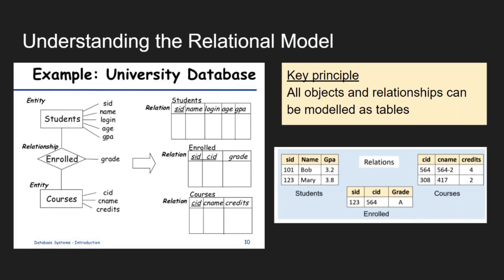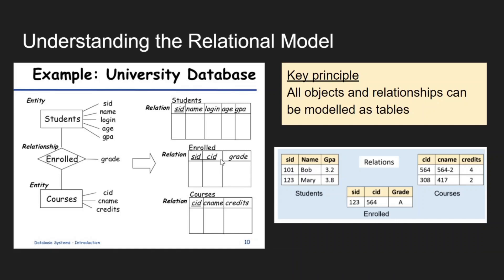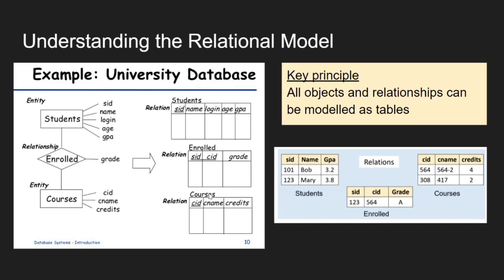The key principle of the relational database model is that all objects and relations can be modeled as tables. Relationships in this model are also separately represented as tables. For example, in a university database, you'd have one table for students, one for courses, and a separate table for enrollment that includes both student IDs and course IDs. That enrollment table is a relational table — it declares the relationship between your data.